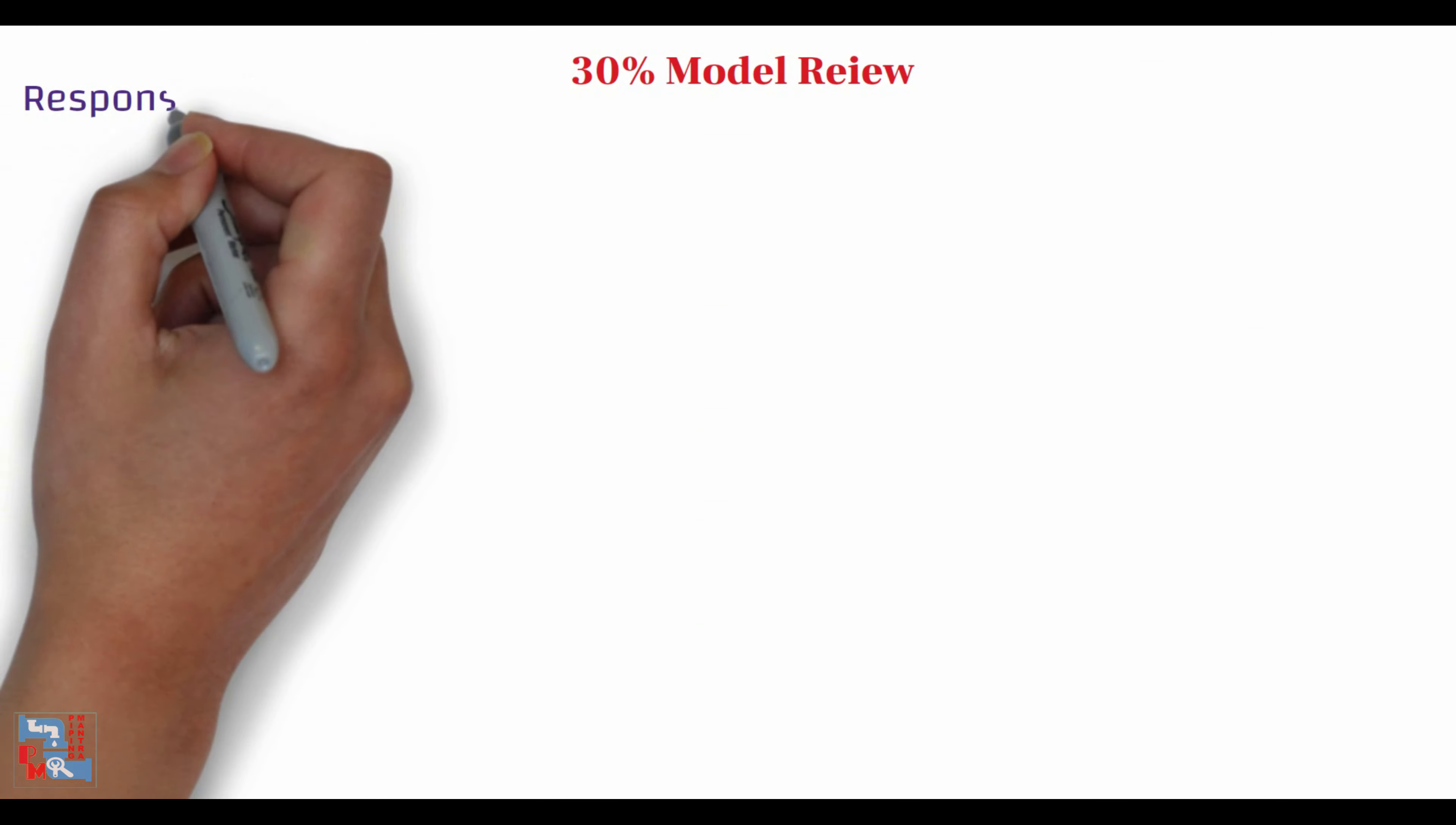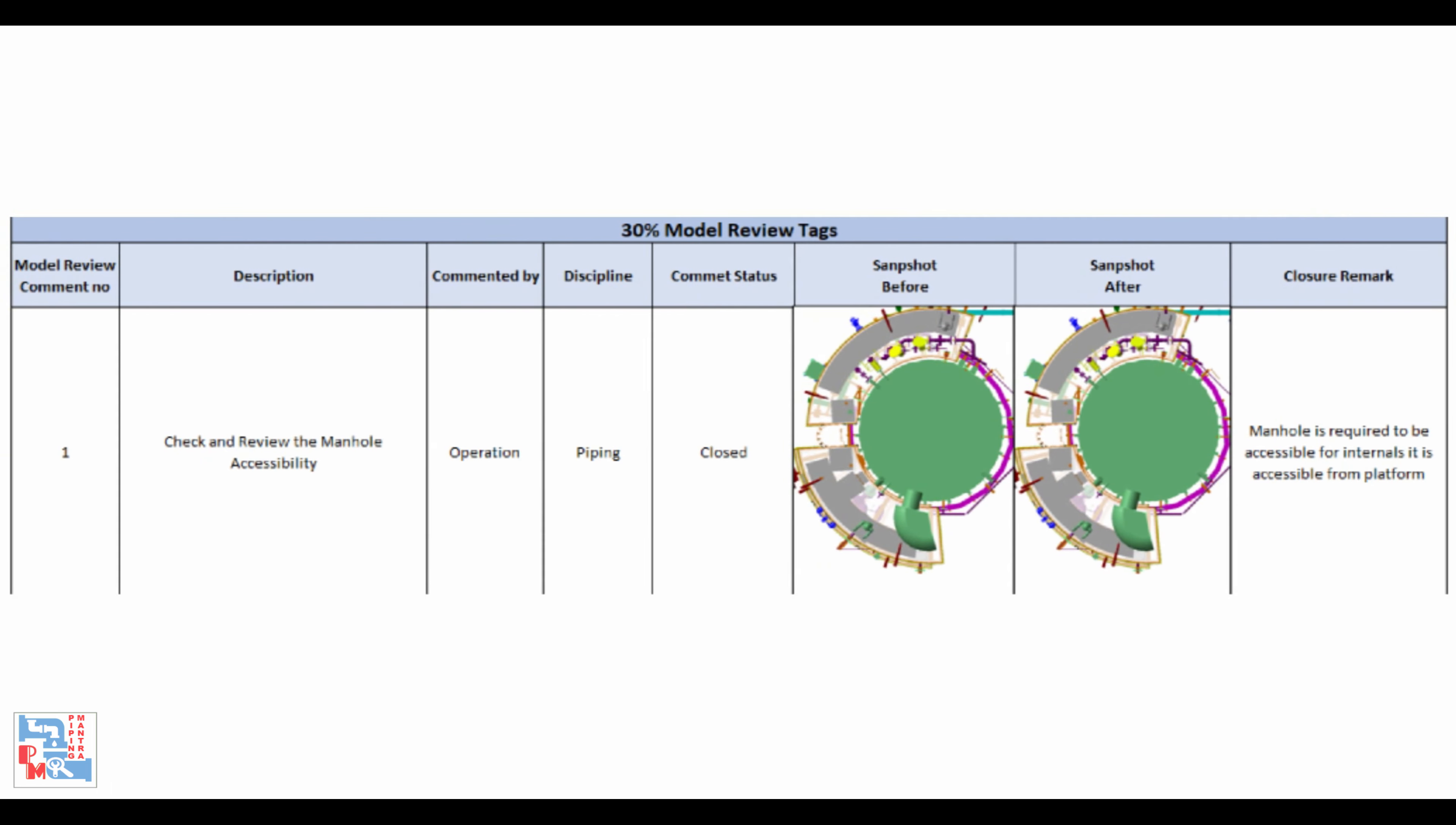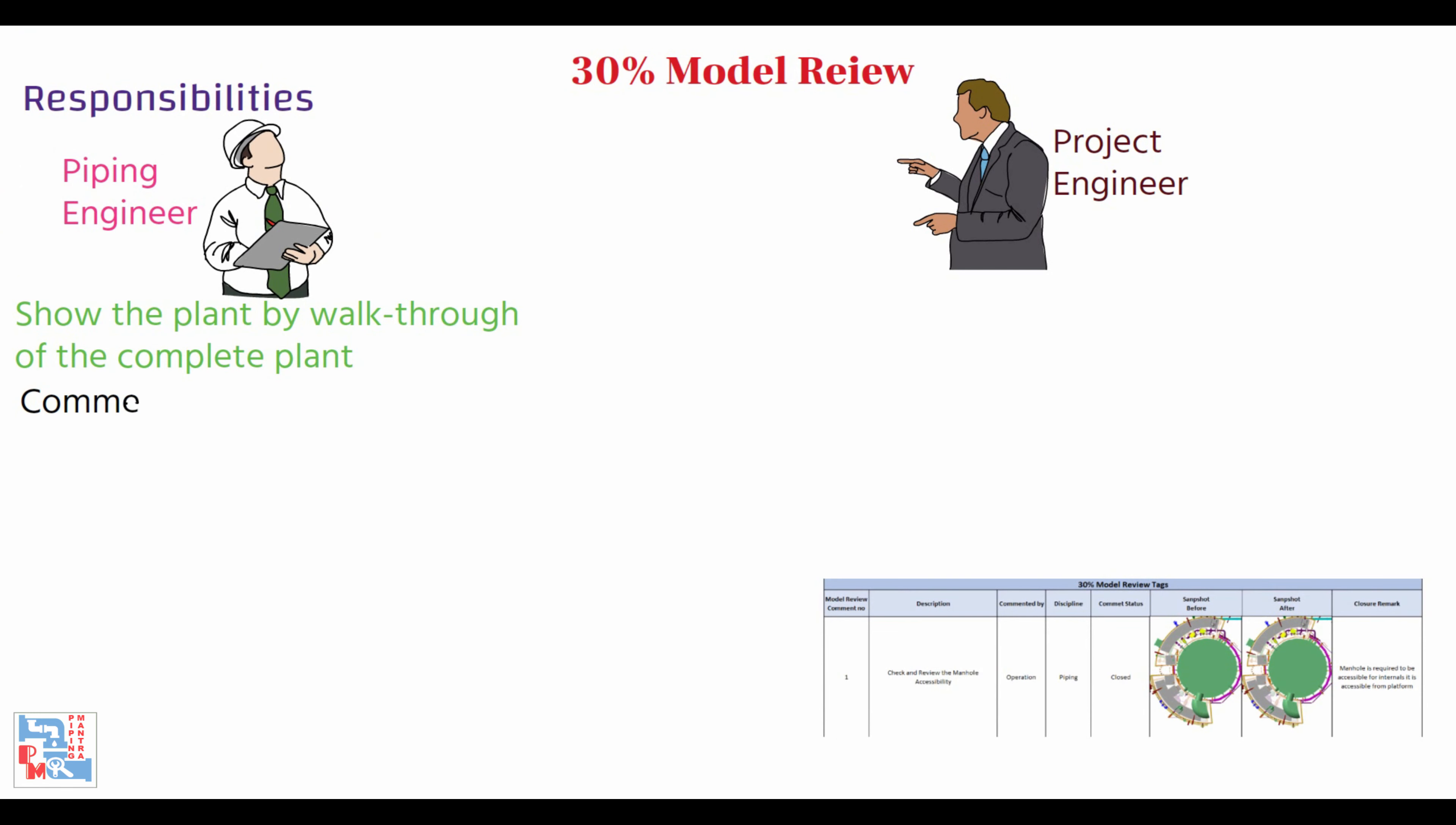Now let's talk about model review responsibilities. The piping engineer and the project engineer are the primary organizers of the model review. The piping lead shows the plant through a walkthrough of the complete plant. All comments are recorded in a proper project format for resolution and incorporation. Any necessary changes and comments are agreed upon and immediately recorded and marked with reference numbers and model pictures to allow follow-up and avoid misunderstanding.